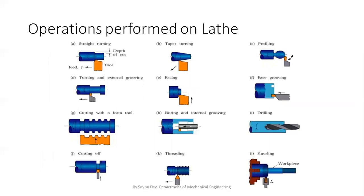This slide covers operations. There are several operations we can perform on a lathe — that is why we call it the mother of all machines or machine tool. The operations include straight turning, taper turning, profiling, grooving, facing, face grooving, and other important operations like drilling, threading, knurling, etc. I am going to prepare a next video on the basic operations of this lathe.